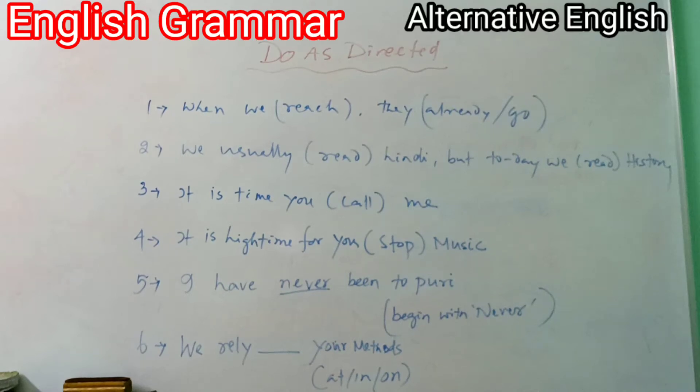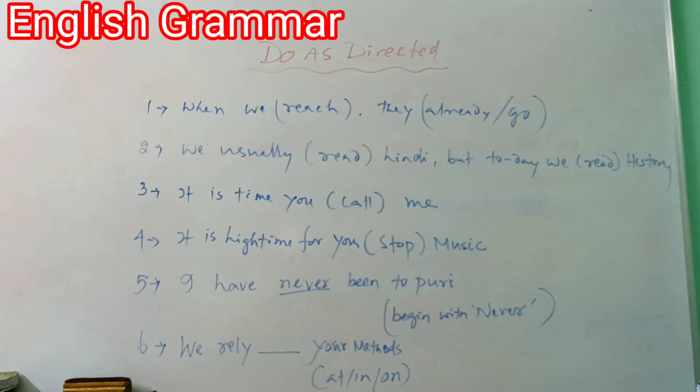Hello students, now look at this 'do as directed' section. This type of question is coming for 10th and alternative English students, and also for degree students of alternative English. So focus on these questions. There are six questions on the board. I will tell you the answers with reasons.